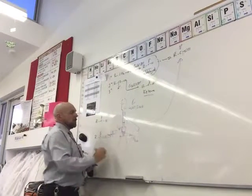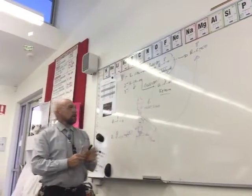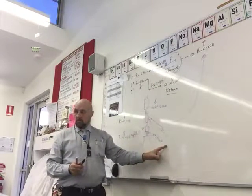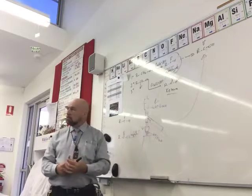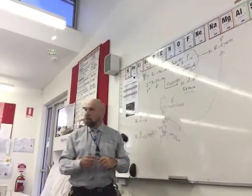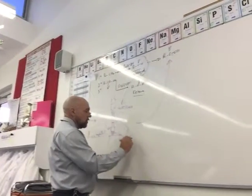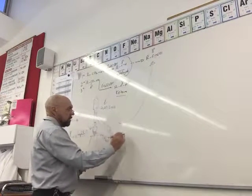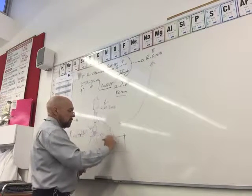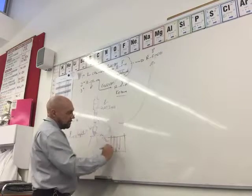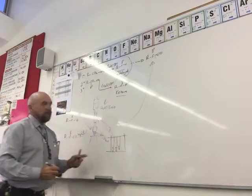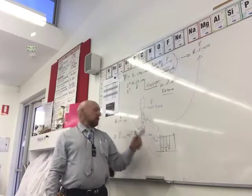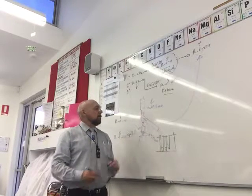We distill the aldehyde off as soon as it's formed — we have to. If we don't, we end up with lots of carboxylic acid. We collect fractions at various boiling points. But this is a little bit hit and miss — it's a bit of an estimation.